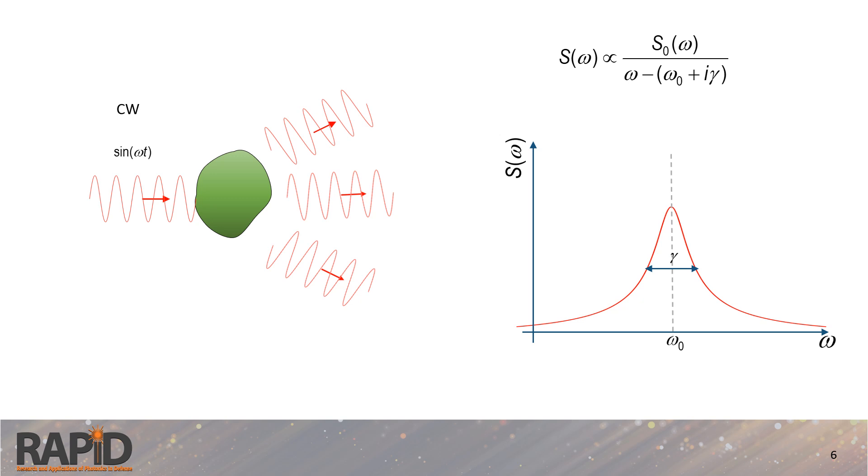Let's consider a generic scattering object excited by a harmonic signal at a frequency omega. Upon scattering, different partial waves propagate in various directions. This scattering process is characterized by a response function S, which depends on the frequency omega. The typical formula for this response function is presented here. If we plot this function against omega, we observe a Lorentzian resonant profile. This profile is centered around omega_0 with a bandwidth gamma, where gamma represents the losses and decoherence in the system.